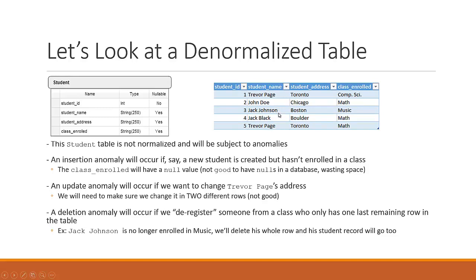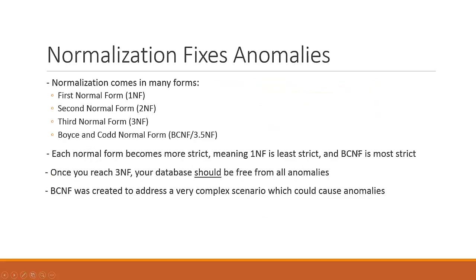All of these anomalies are occurring because we have a denormalized table. Once we make this student table a more normalized table — remembering that normalization is a process of taking a big table and breaking it into smaller tables — we're going to be taking this student table and breaking it up into more tables.